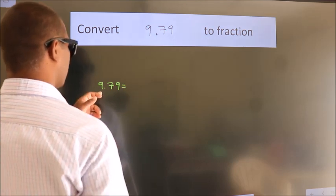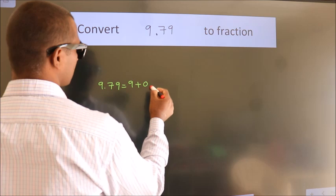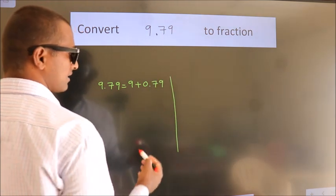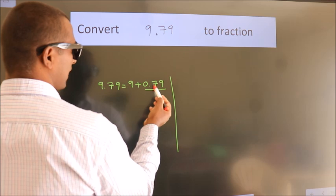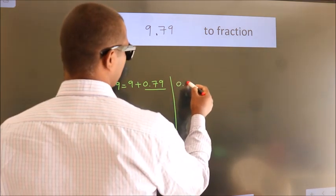First we should break this into 9 plus 0.79. Next, convert this to fraction. So 0.79.